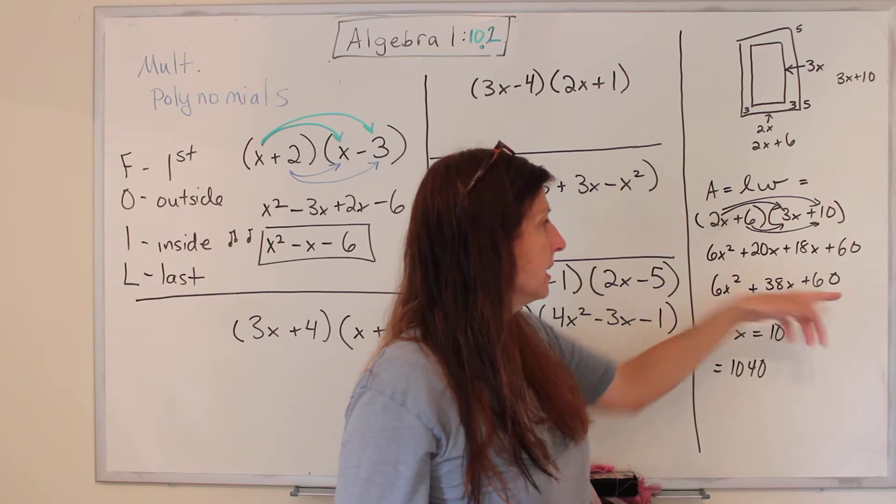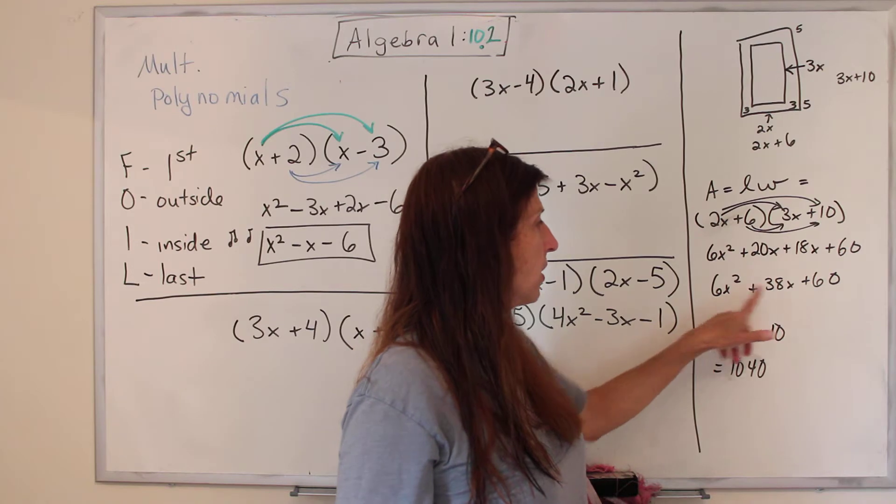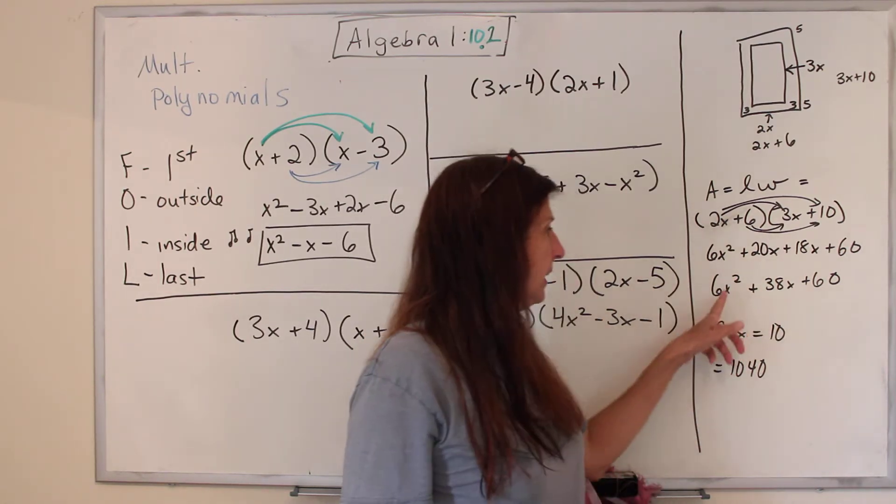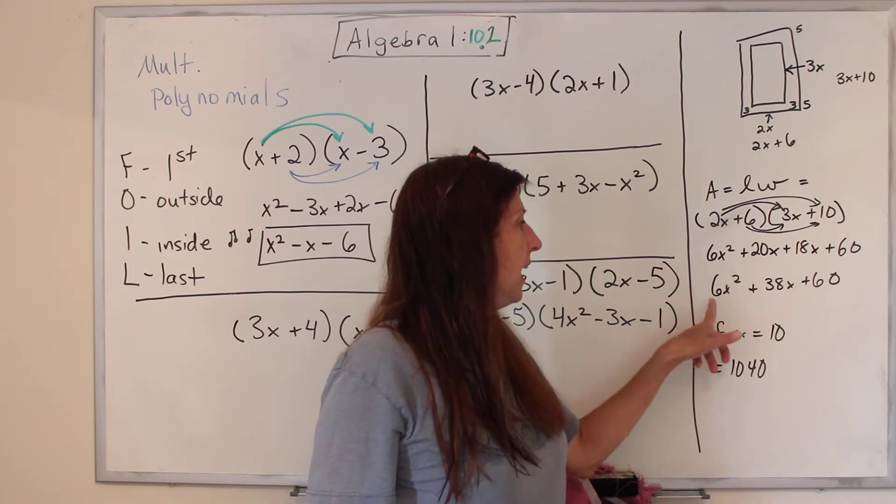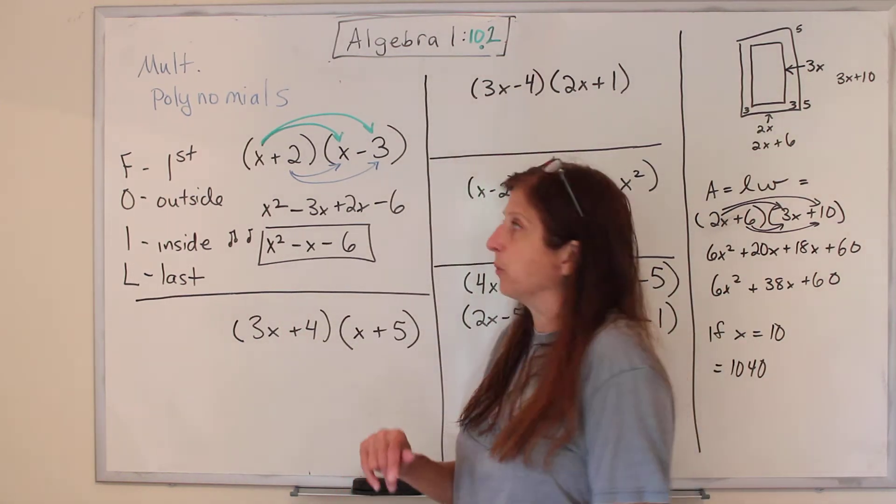These are called the terms, and the numbers are called the coefficients, and the leading exponent is called the degree, and that's called the leading coefficient. It's a little special, we'll find out later why.